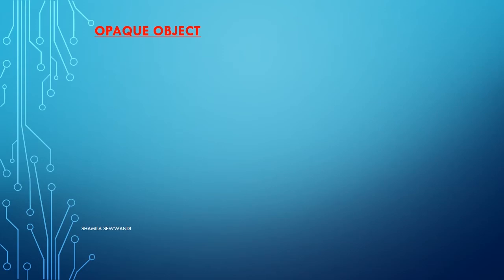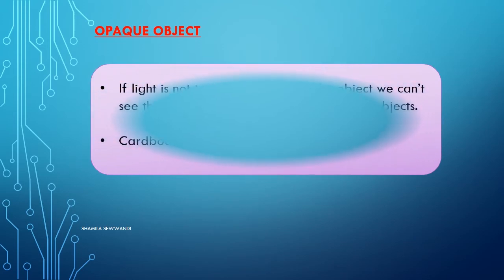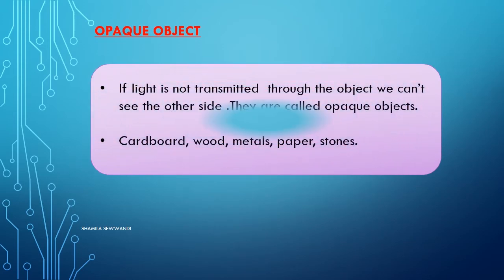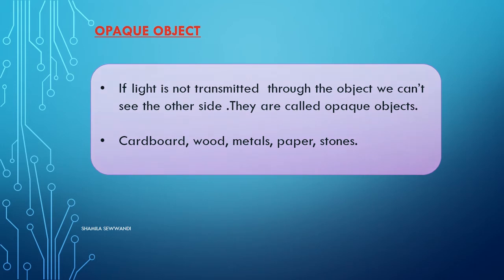If light is not transmitted through the object, we cannot see the other side. They are called opaque objects. Examples of opaque objects: cardboard, wood, metal, paper, and stone.